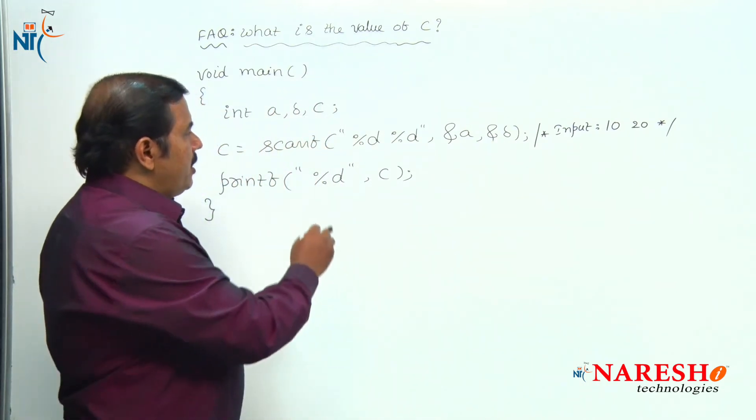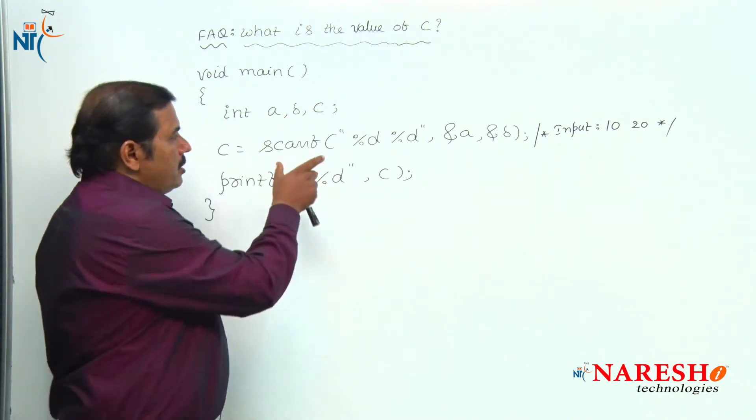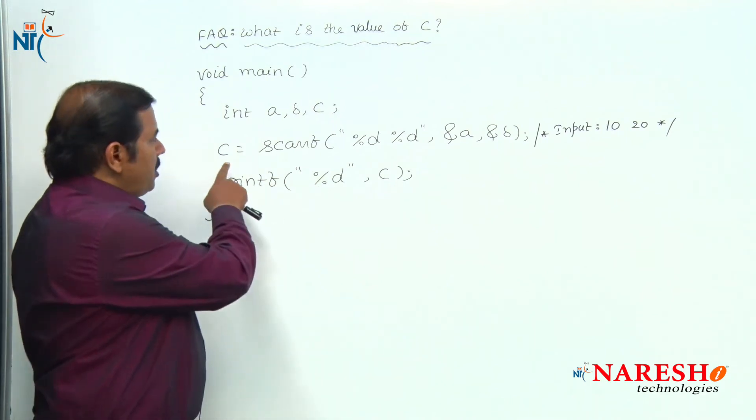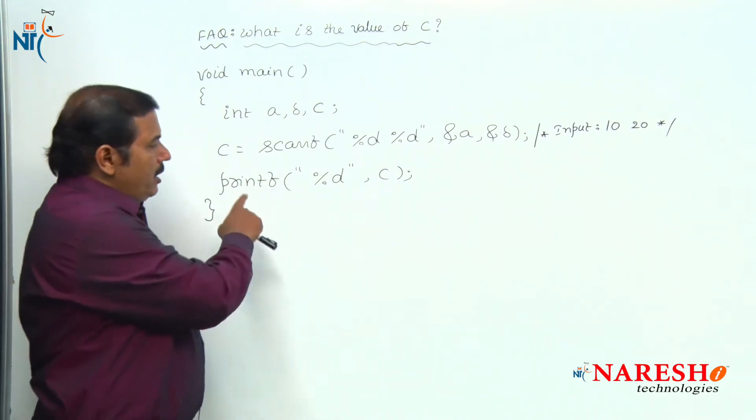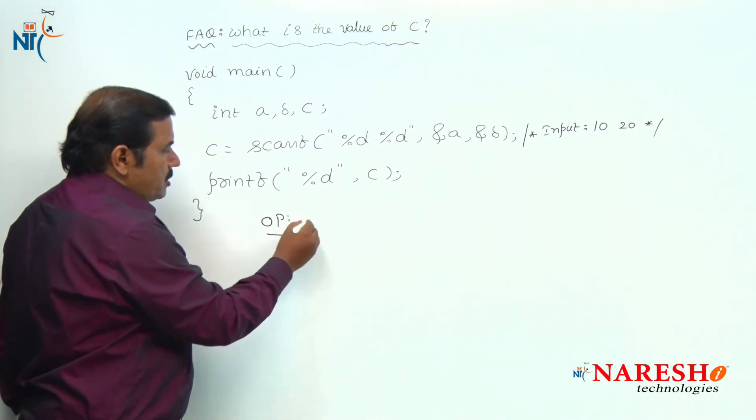Now, the scanf function is reading two input values from the user. Hence, the scanf function returns the value 2 into the variable c. Finally, the printf function prints the c value 2 onto the screen.